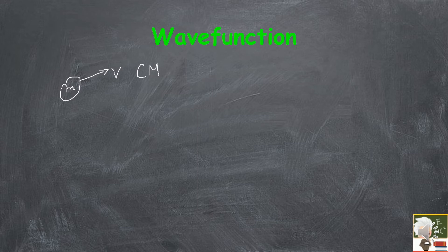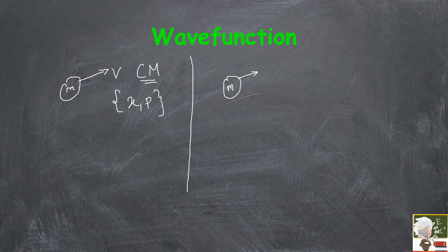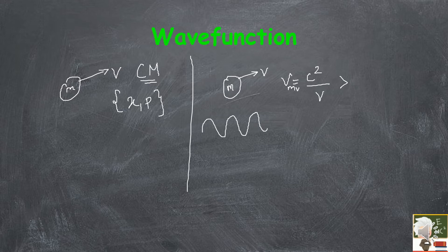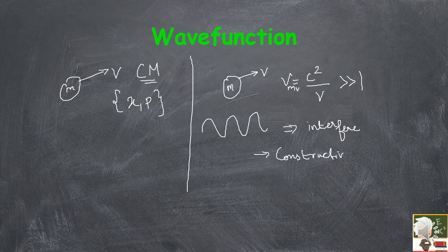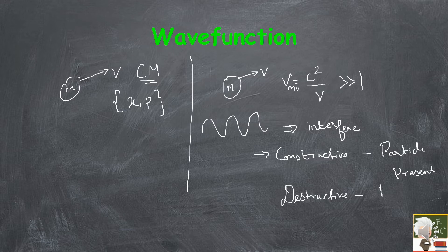In classical mechanics, the motion of a particle of mass m is described classically. The velocity of the matter wave will be c²/v, which will be much less than 1. These waves interfere. Where there is constructive interference, your particle will be present.